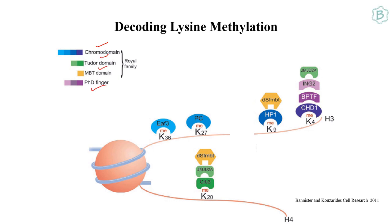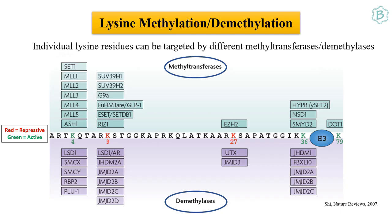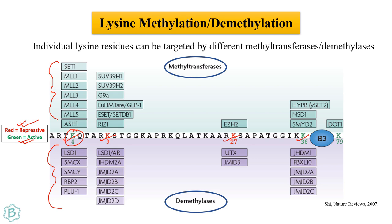Reader proteins recognize methylated lysine residues and then execute the function. On the H3 histone chain, lysine residues shown in green represent active marks and red represents repressive marks. K4 methylation of H3 can be done by many methyltransferases and the methyl group can be removed by many demethylases; similarly for other lysine groups.